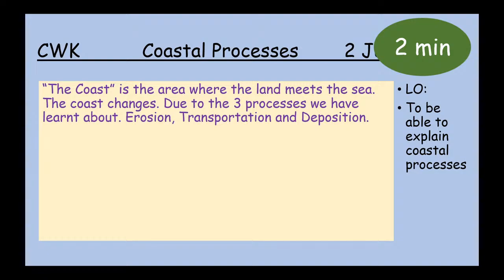Today we're learning about the coast. The coast is the area where the land meets the sea. The coast changes due to the three processes we've already learned about — erosion, transportation, and deposition. We learned about those in relation to rivers, and those processes perform the same jobs and act in the same way at the coast. So it's really convenient that we only need to learn it once — it applies to two different situations. Before we look at some pictures, pause the video for about two minutes, copy down that information, and when you're ready hit play.